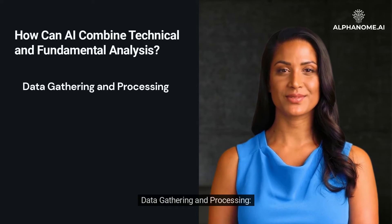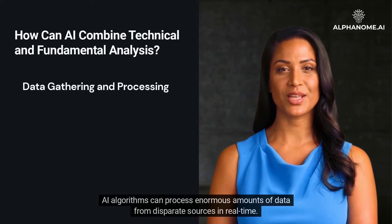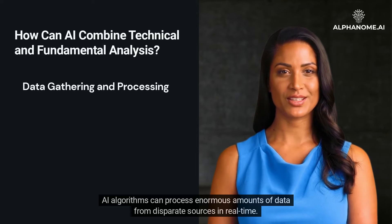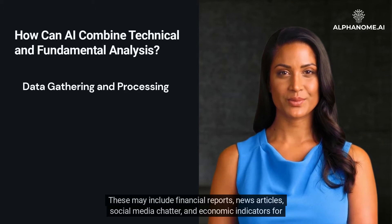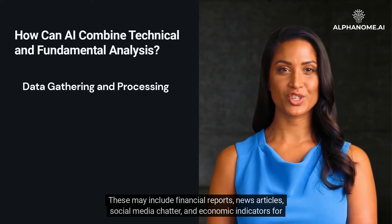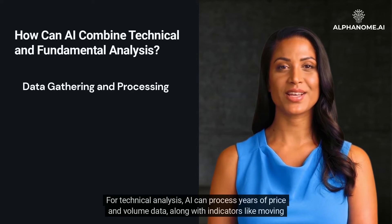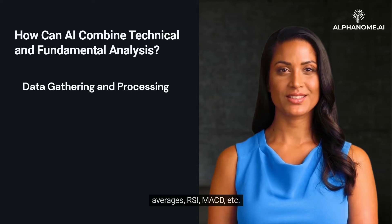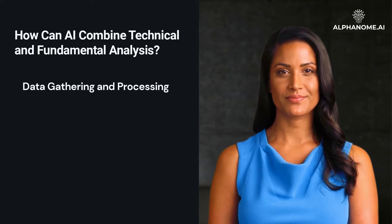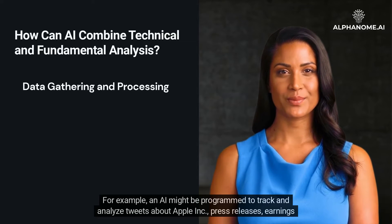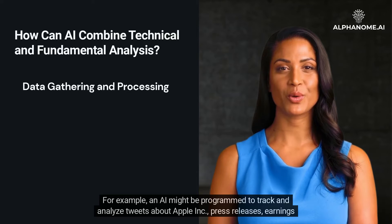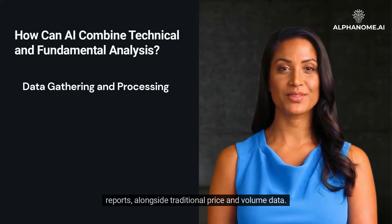Data Gathering and Processing: AI algorithms can process enormous amounts of data from disparate sources in real time. These may include financial reports, news articles, social media chatter, and economic indicators for fundamental analysis. For technical analysis, AI can process years of price and volume data, along with indicators like moving averages, RSI, MACD, etc. For example, an AI might be programmed to track and analyze tweets about Apple Inc., press releases, and earnings reports alongside traditional price and volume data.